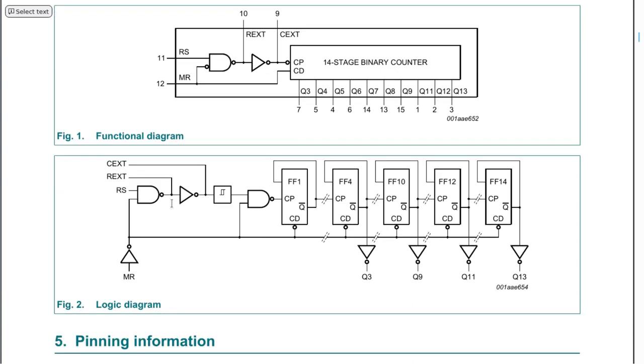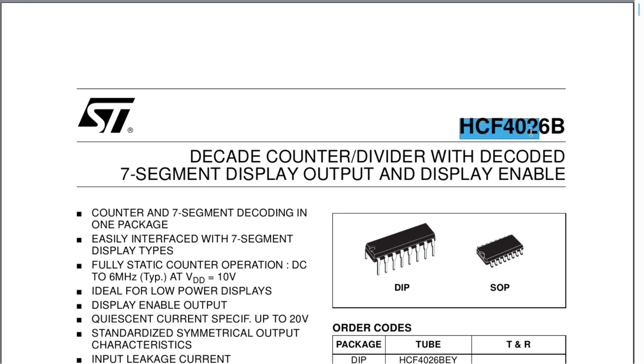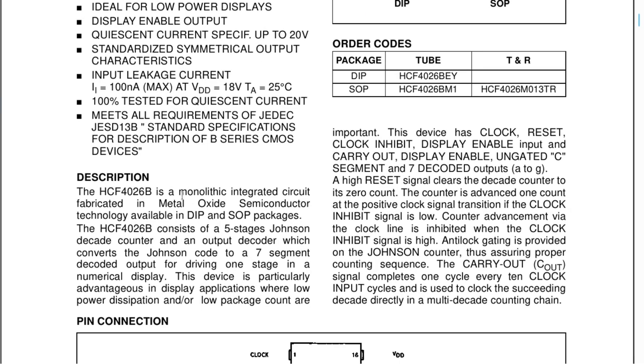The 4026 chip is a monolithic chip that contains a five-stage Johnson decade counter and an output decoder that converts the Johnson code into seven-segment decoded output.